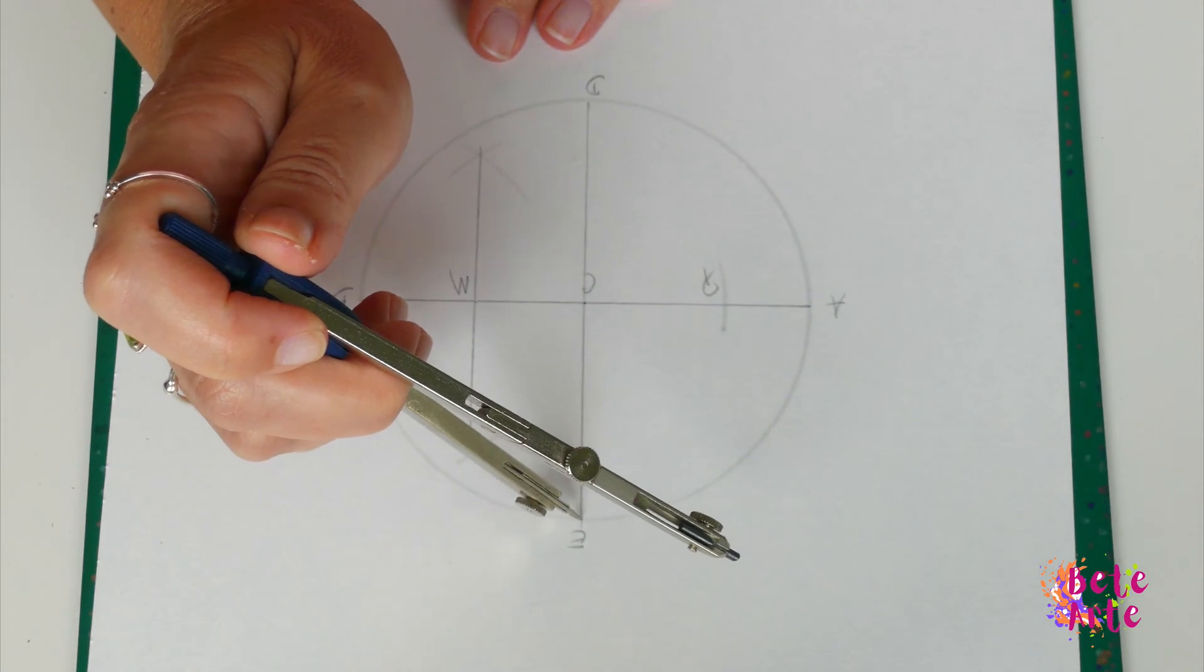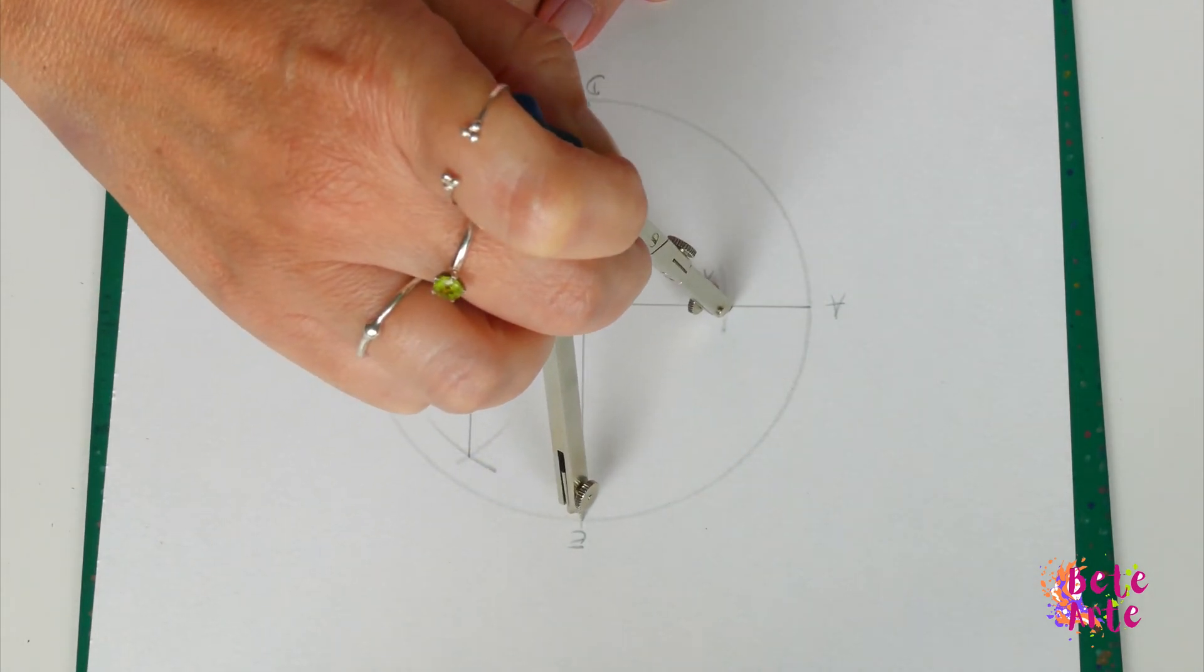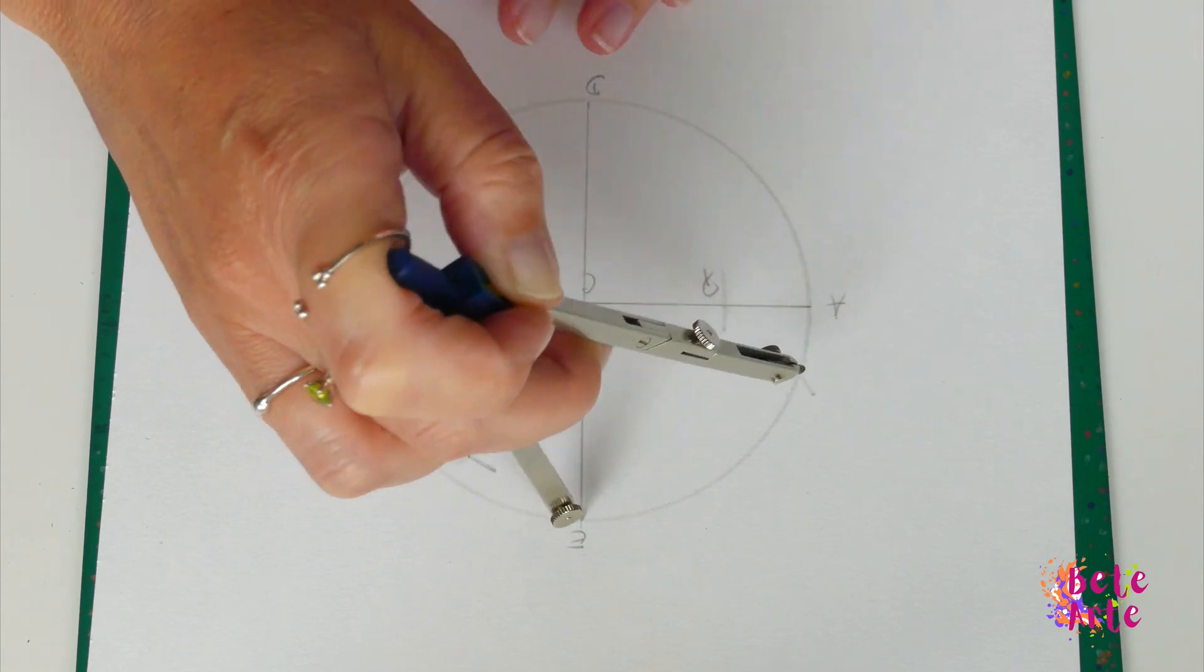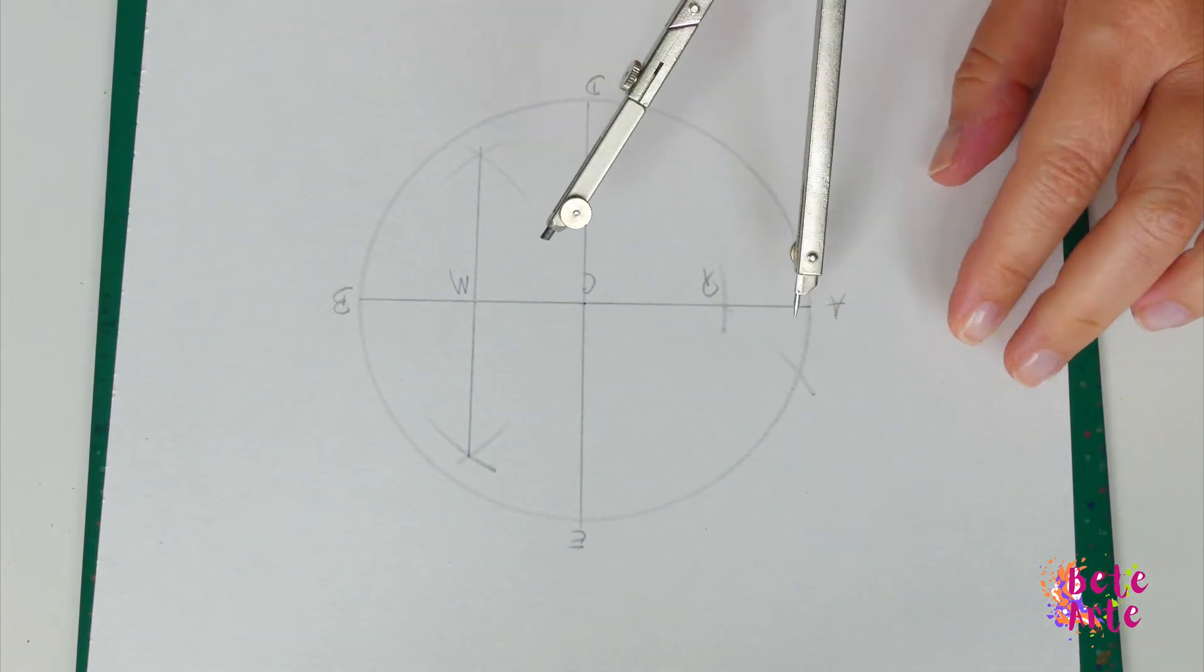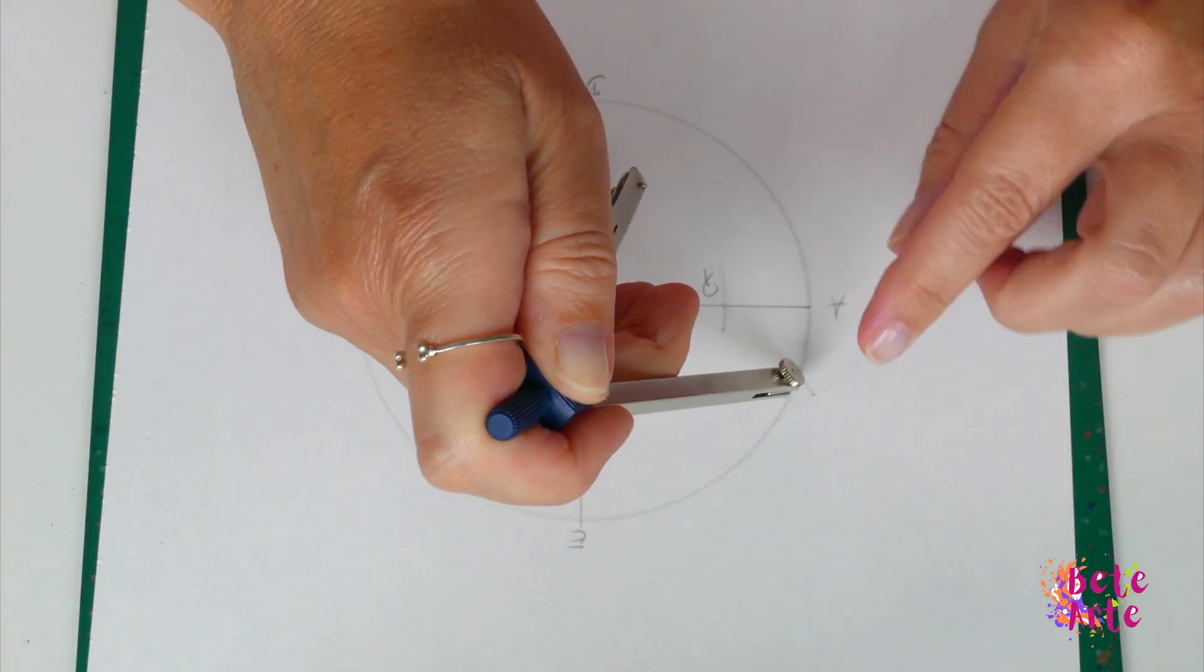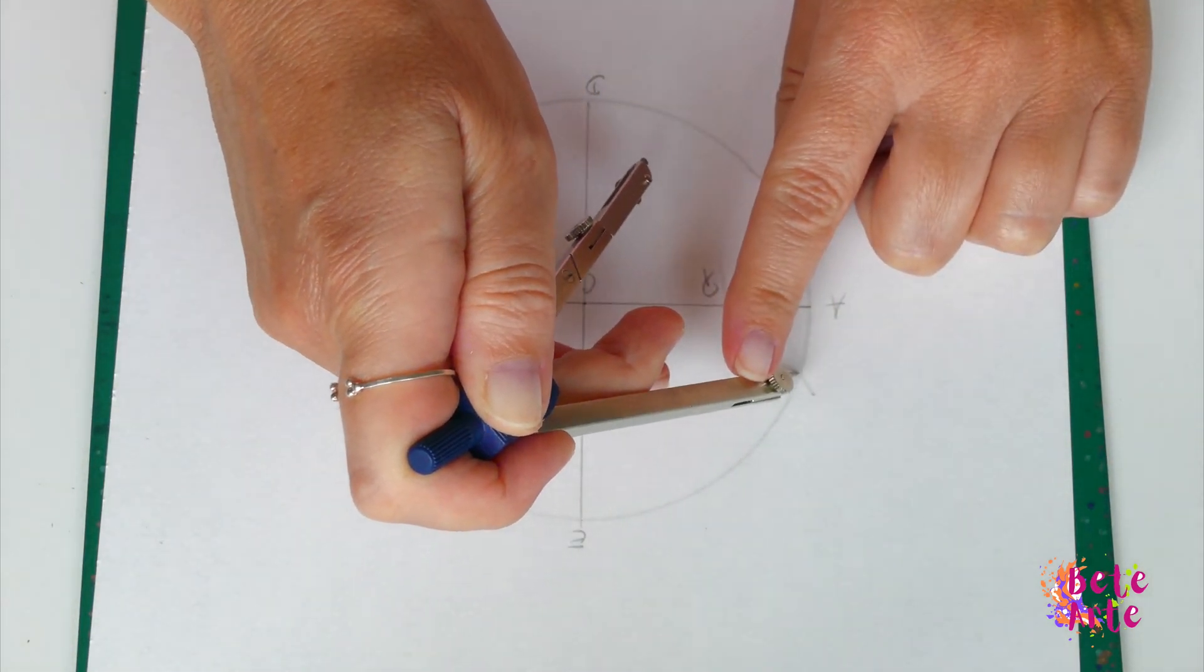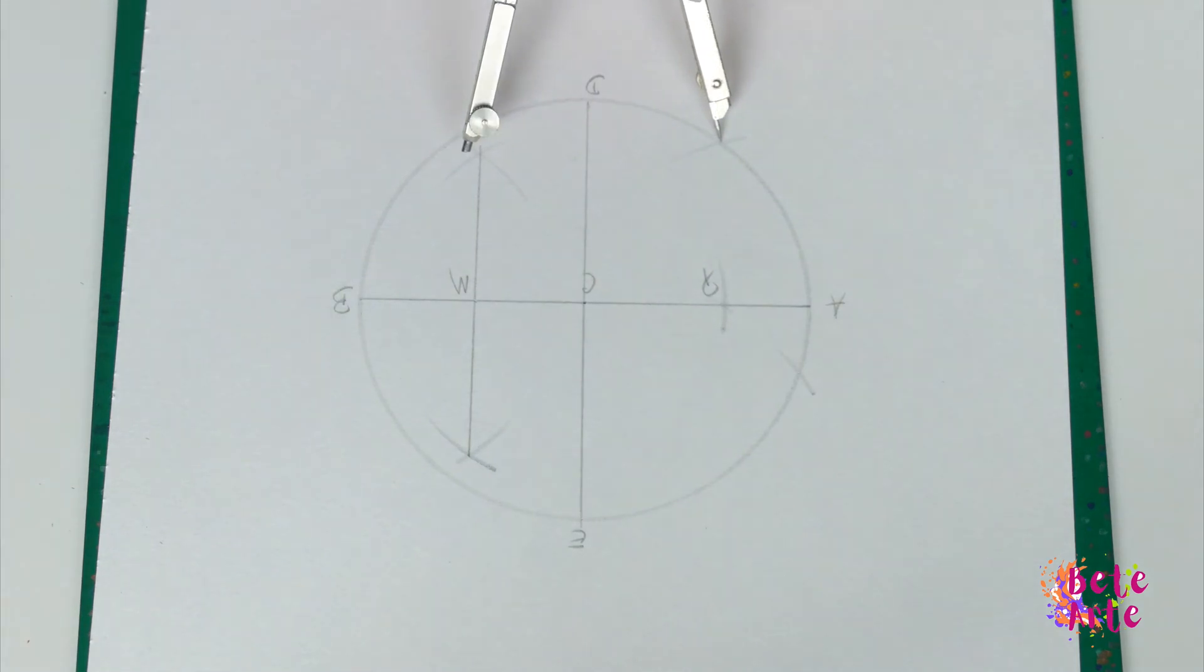From point E, move the compass to P and mark the point 1 in the circle. Now mark 3 more times this measure in the circle.